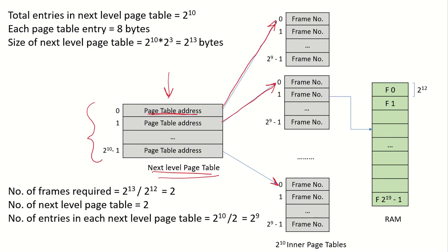We now check whether this next-level page table fits in one frame. It has 2^10 entries, each 8 bytes, so its size is 2^10 × 2^3 = 2^13 bytes. Our frame size is 2^12 bytes, so the number of frames required is 2^13 / 2^12 = 2 frames.